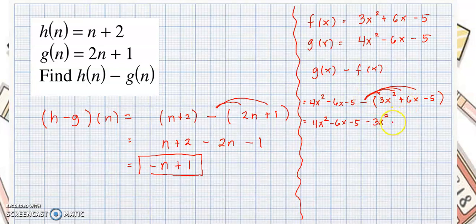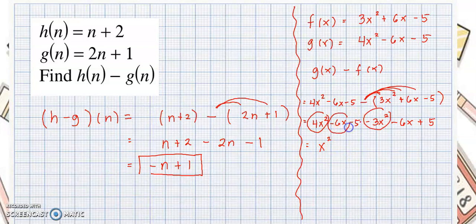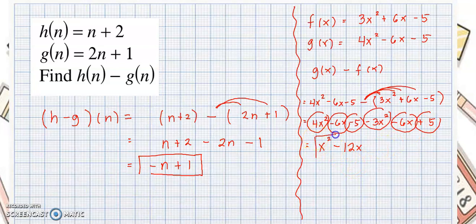Negative times positive 6x is negative 6x. Negative times negative 5 is positive 5. Then we combine like terms: 4x squared minus 3x squared equals x squared. Negative 6x minus 6x — since they have the same sign, we add and copy the sign — so this would be negative 12x. Then negative 5 plus 5 is simply 0. So the answer for this one would be x squared minus 12x.